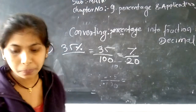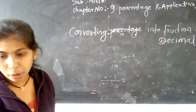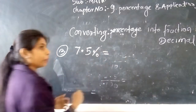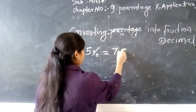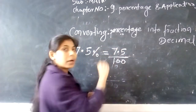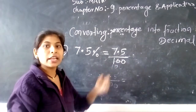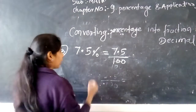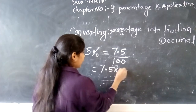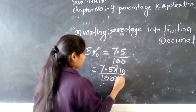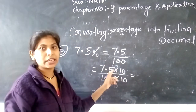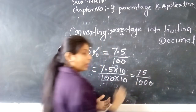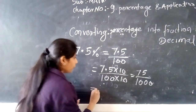अभी हम लेंगे next problem। हमारे पास यह third problem है 7.5 percent। 7.5 percent को हम कैसे लिखेंगे? 7.5 divided by 100। यहाँ पे यह decimal point है। इस point को हटाने के लिए हम numerator और denominator में 10 से multiply करेंगे। 7.5 × 10 और 100 × 10 — तो हमारा decimal point हट जाएगा। हमारा answer आएगा 75 divided by 1000। इसको फिर से divide करेंगे 20 से।